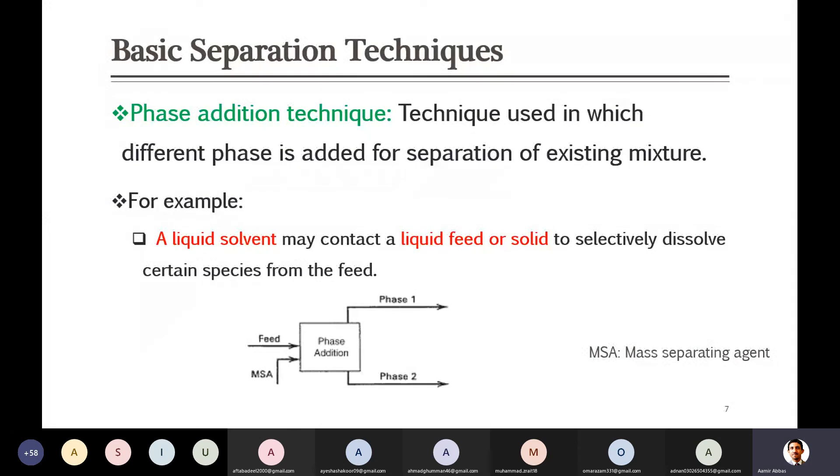Liquid solvent may contact a liquid feed or a solid. Here another example is given - you can bring the liquid solvent and can contact it with some liquid feed or maybe sometime with the solid to selectively dissolve or remove some species from the feed. As you can see in the diagram, there is a feed but you are introducing something else along with this, which is mentioned here as MSA. MSA we call it generally mass separating agent - anything which you will be bringing in the form of mass, not in the form of heat.